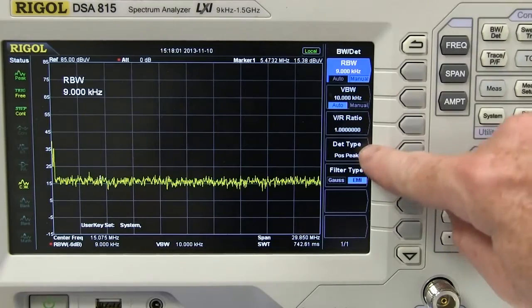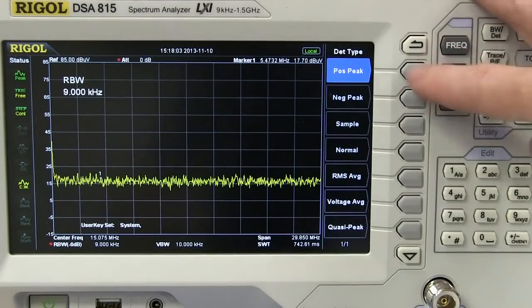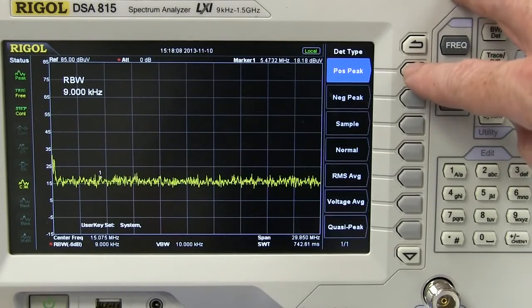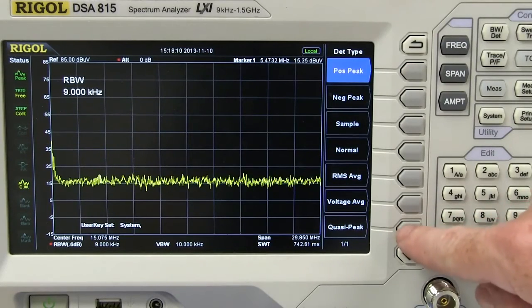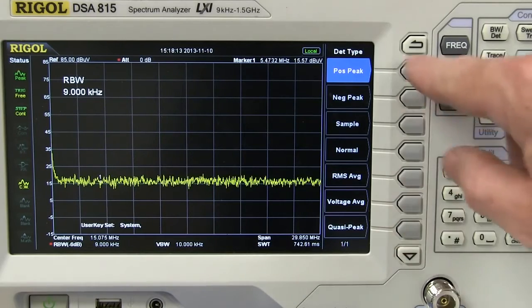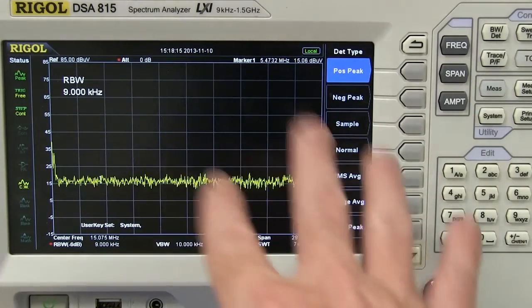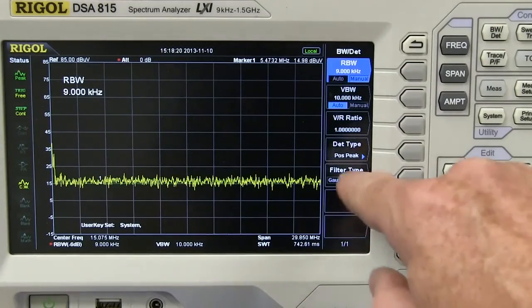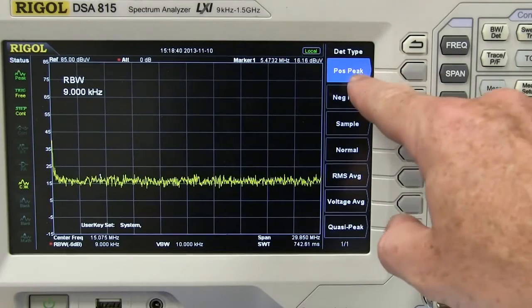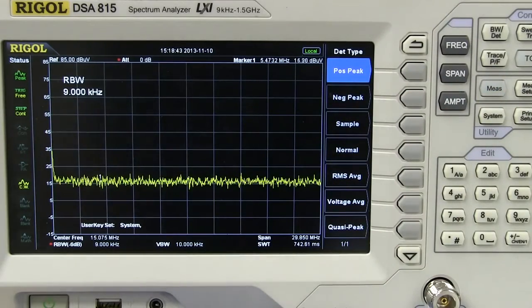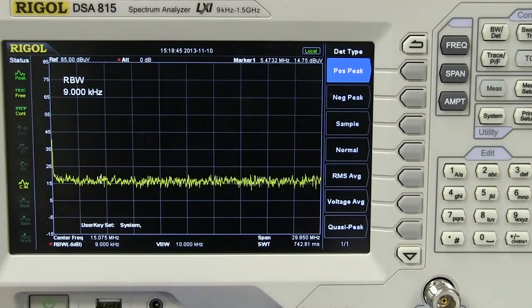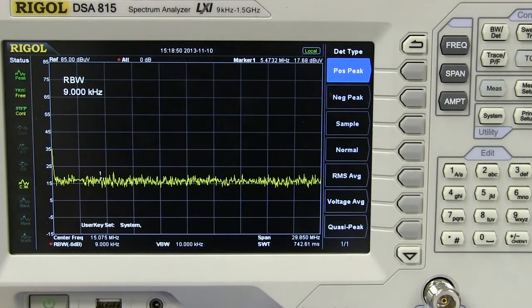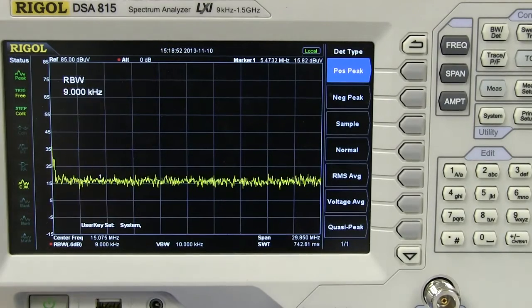Now, the really important thing is our detector type there. For very quick, first pass measurements you want to send it to positive peak there. Quasi-peak is what we're going to do for more detailed measurements of this thing, which takes a lot longer to scan and give you a result. But the positive peak, that's what we want with our EMI filter, if you have it. And what that positive peak detection type is going to do is basically going to give you the worst case at each frequency point, the worst case value. And that's really all we care about. Does it go over the limit or not? That's pretty much it.